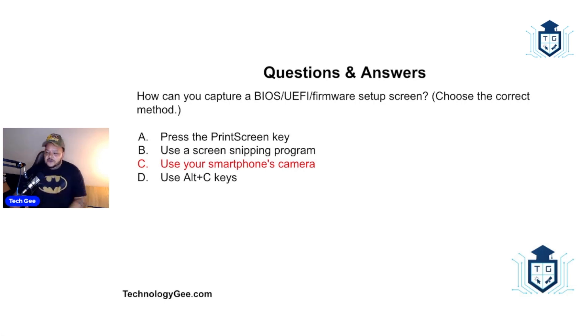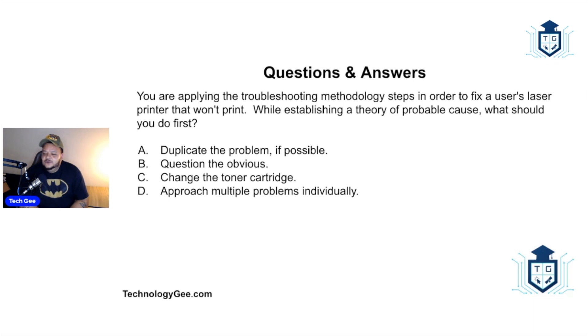You are applying the troubleshooting methodology steps in order to fix a user's laser printer that will not print. While establishing a theory of probable cause, what should you do first: duplicate the problem, question the obvious, change the toner cartridge, or approach multiple problems individually? You're trying to figure out what's wrong with this thing. The correct answer is you should question the obvious.